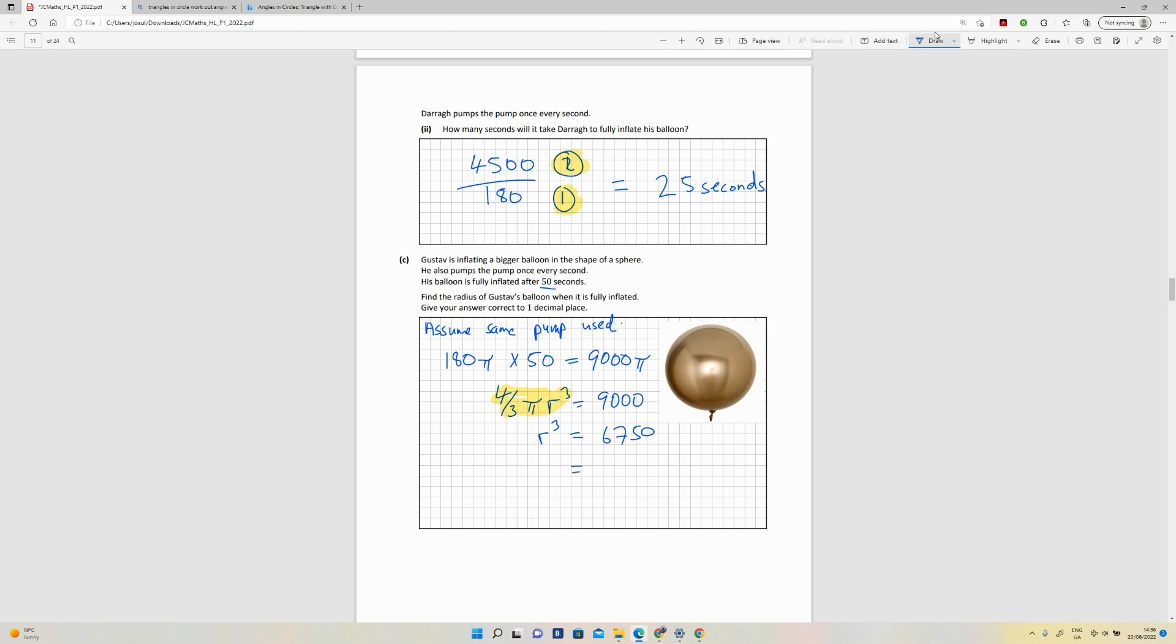To simplify that further, if I get the cube root of 6750, do that on your calculator, that's going to give me 18.8988. You've been asked for one decimal place, so we're going to bring that to 18.9 centimeters. So the radius of this balloon is 18.9. That's the answer for part C.